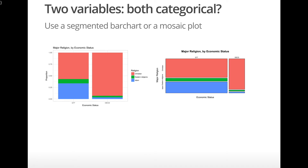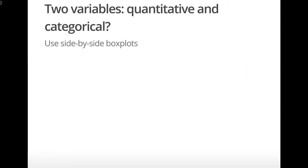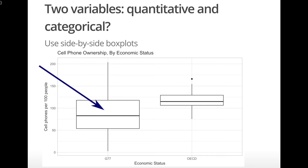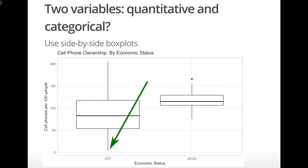Earlier, we explored the distribution of number of cell phones per 100 people, but what if we wanted to explore this distribution by economic status — how does the distribution compare between G77 and OECD countries? Now we still have two variables, but one is quantitative and the other is categorical, so we can use side-by-side box plots. We see that there is much more variability in number of cell phones per 100 people in G77 countries than in OECD countries. In fact, there are some G77 countries with as few as 2.5 cell phones per 100 people, and some with as many as 204 cell phones per 100 people.